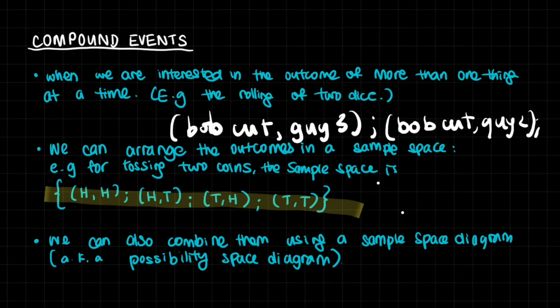Bob cut comma guy three. That's an outcome in which, you know, her dream comes true, and she gets together with her crush. Another probability is dictated by the semicolon. It says Bob cut comma guy two, and you can go on and on and on and list all of the nine pairings that we just looked at.